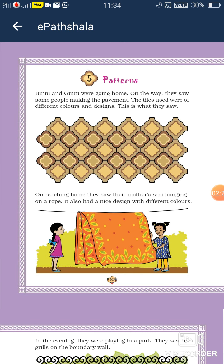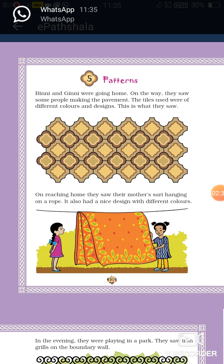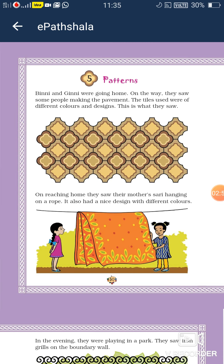Now on reaching home, they saw their mother's sari hanging on a row. Jab woh log ghar pahunche toh unhone dekha ki unki maa ka sari ek rassi mein sukhaya hua tha. Hum log bhi apna kapda dhoop ke karan sukhate hain. Woh log apni mummy ki sari ko dekhe — it also had a nice design with different colors. Yahan pe orange color ki sari ke upar red color ke dots hain, yellow dots bhi hain, leaves ka bhi pattern banaya hua hai, aur usme green colors bhi diye gaye hain.